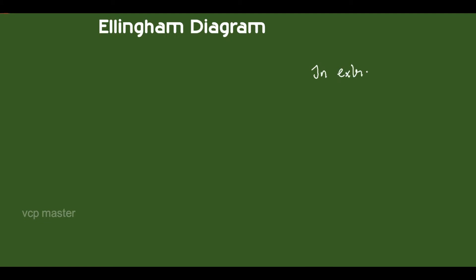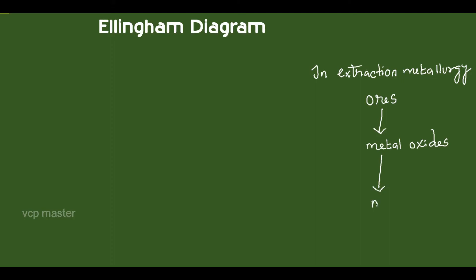In extraction metallurgy, that is, during the extraction of metals from their ores, the ores are first converted into metal oxides by roasting and the metal oxides are then reduced to the corresponding metal. There are many methods to convert metal oxides to metal, depending upon the nature of the metal oxide.